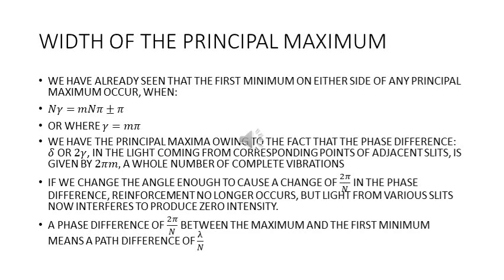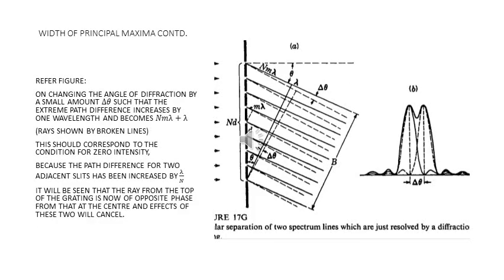Therefore a phase difference of 2π/N between the maximum and the first minimum means a path difference of λ/N. Please look at the figure — you will see some continuous lines and some broken lines. What these broken lines indicate is that when light is coming from the grating at an angle which has been changed from θ to θ + Δθ, on changing the angle of diffraction by a small amount such that the extreme path difference increases by one single wavelength.